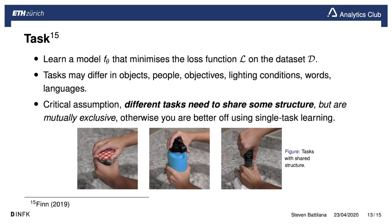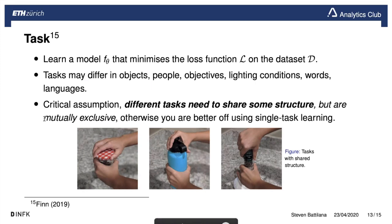To contrast single-task learning with meta learning: instead of learning just one task, we meta-learn across all tasks. The hope is that we end up needing less data and can adapt more quickly to any specific task. We also typically assume mutually exclusive datasets, which will be explained later.